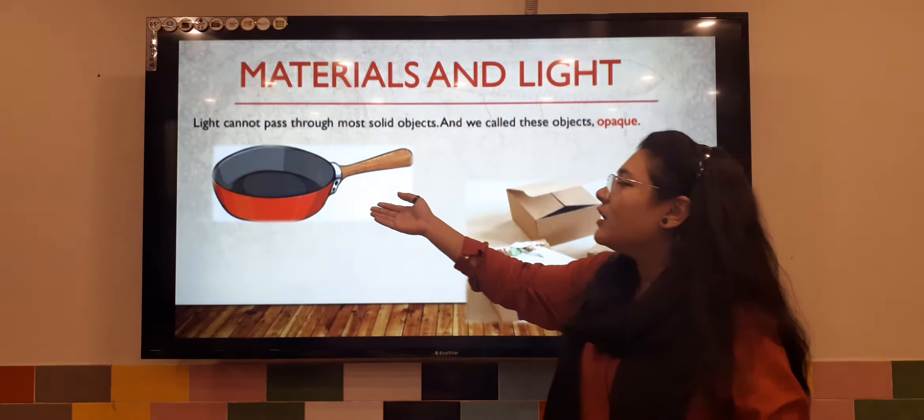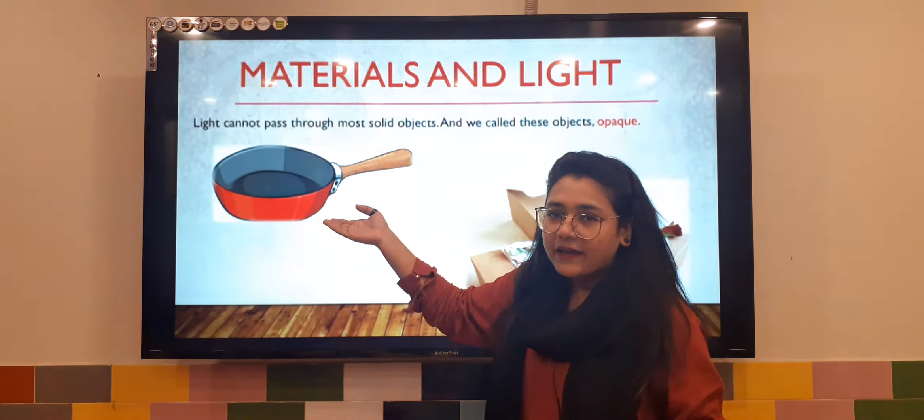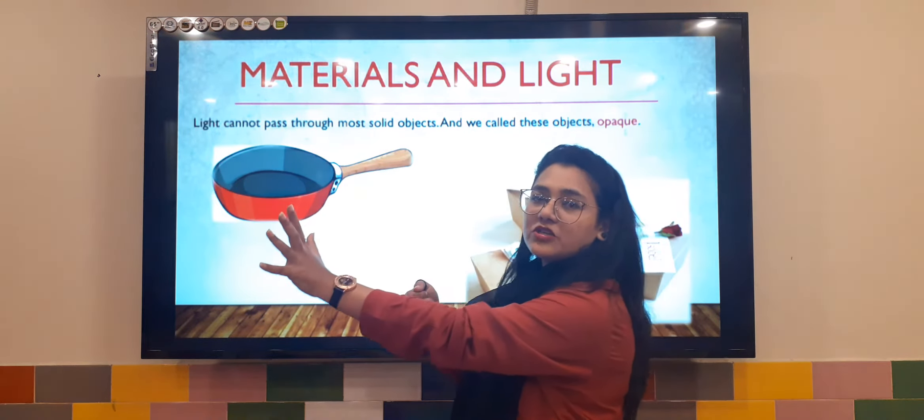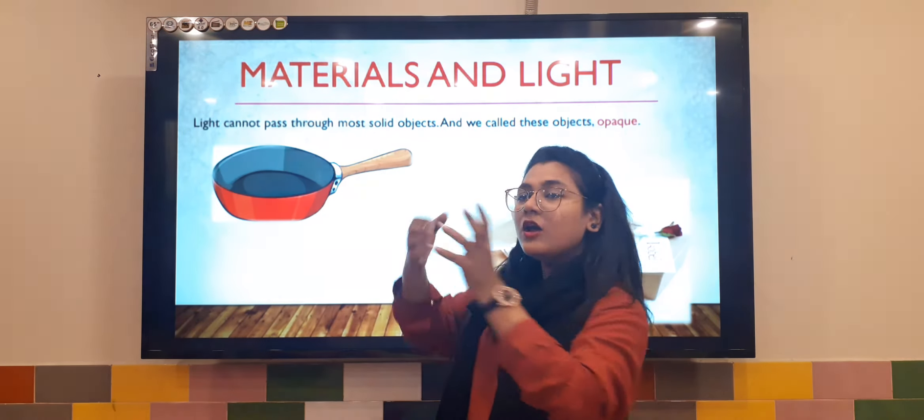For example, if you take a pan and shine a torch light on it, then a shadow will form.